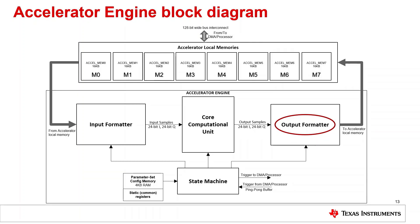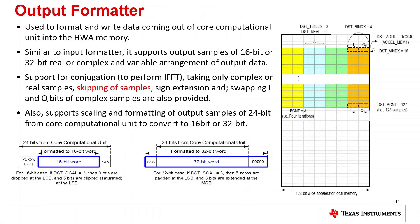Next, let's look at the output formatter block. It is used to format and write data coming out of the core computational engine to destination local memories in the form of 16-bit or 32-bit real or complex numbers. It supports variable arrangement of output data and also supports conjugation and sign extension of output samples. It can also swap I and Q bits of samples and skip samples if necessary. It also supports scaling or formatting of 24-bit wide output samples to 16-bit or 32-bit samples.